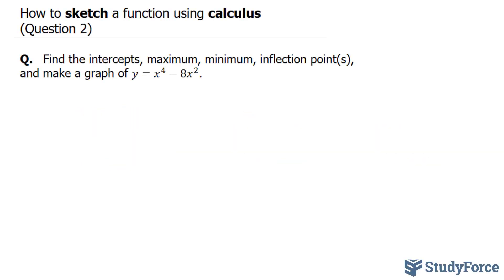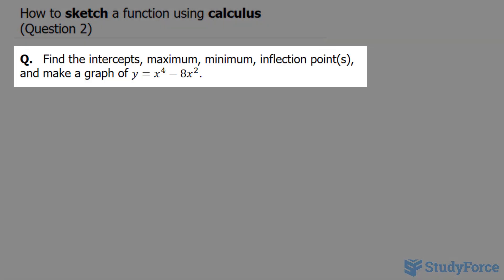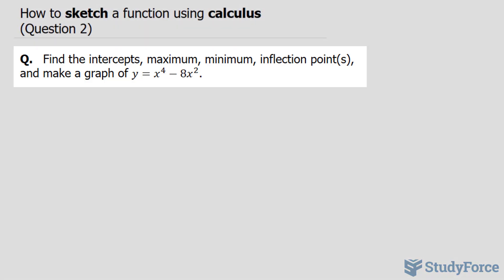In this lesson, I'll show you how to sketch a function using methods of calculus. This is question 2. The question reads: find the intercepts, maximum, minimum, and inflection points, and then use all these properties to make a graph of the equation y is equal to x to the power of 4 minus 8 times x to the power of 2.